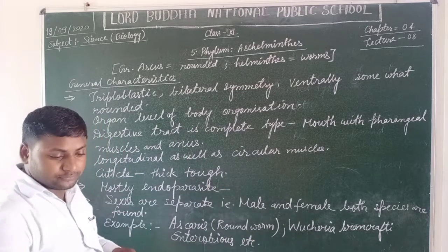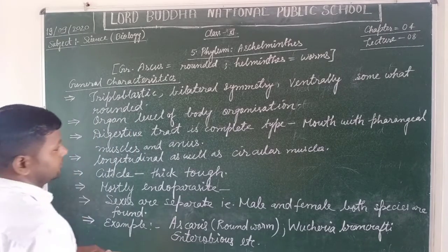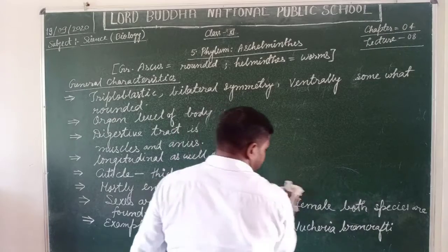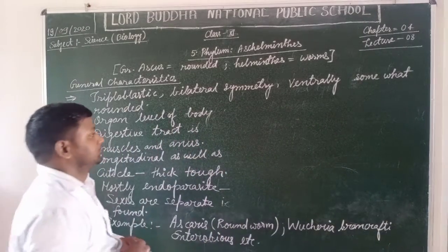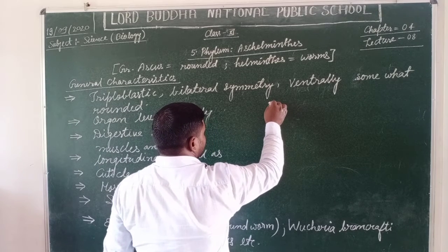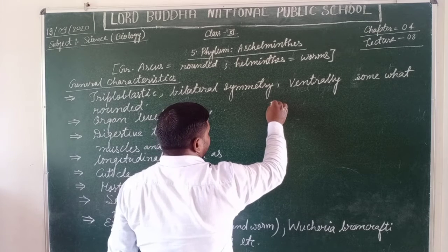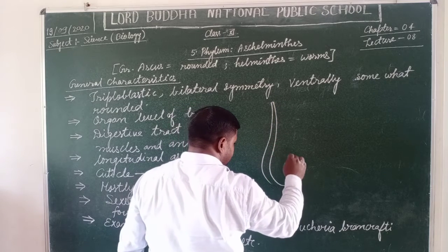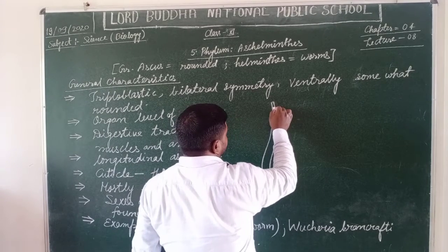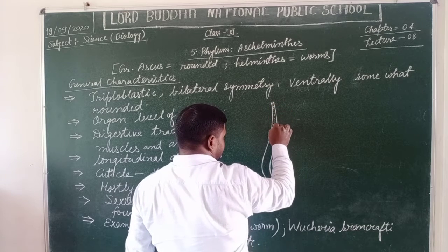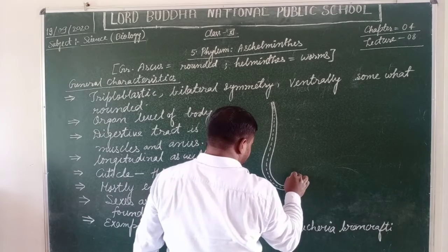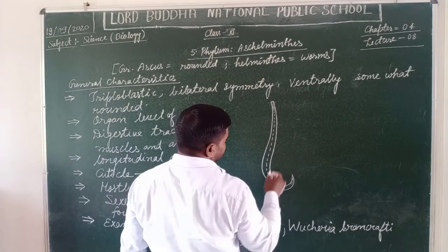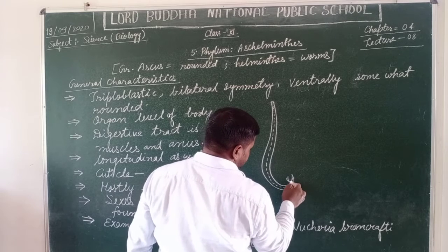Now students, we are going to describe one of the members of this phylum — a general morphological structure of Aschelminthes. One important thing about the morphological structure: the male Aschelminthes is somewhat shorter or smaller than the female Aschelminthes.